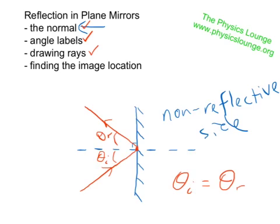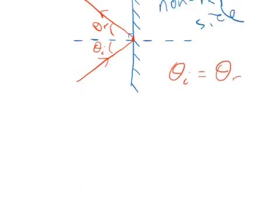So the tricky part is when it comes to finding the image of something. Okay, I'm just going to shift down and start again with another mirror down here. And here's our mirror, here's our shaded side again to show that this is the non-reflective side and our normal. I'm actually going to draw two normals because we're going to deal with two rays.